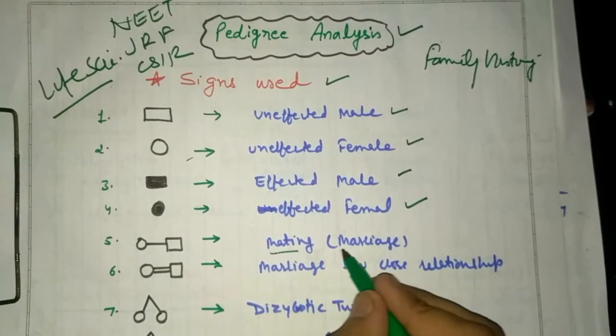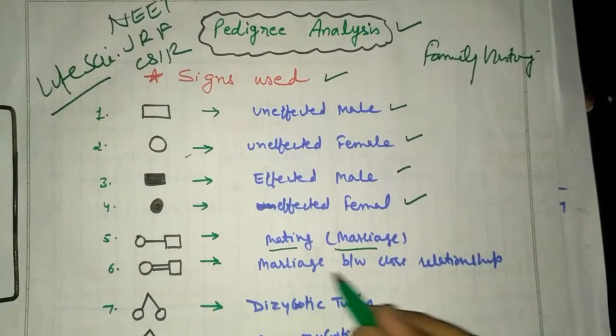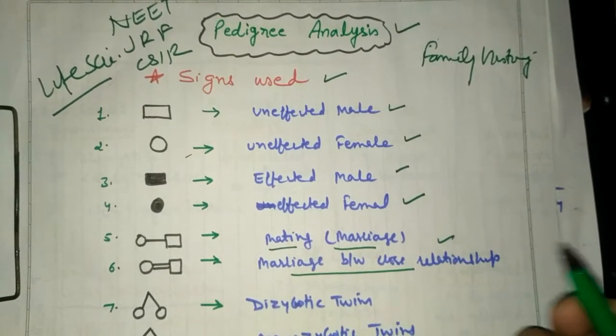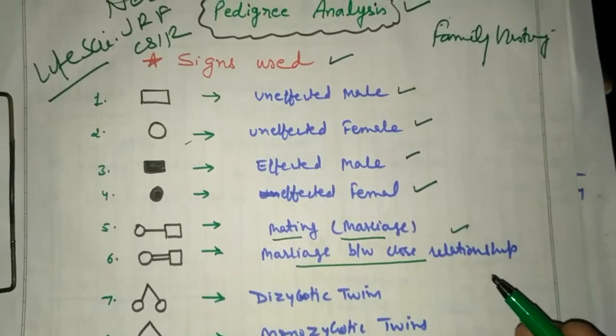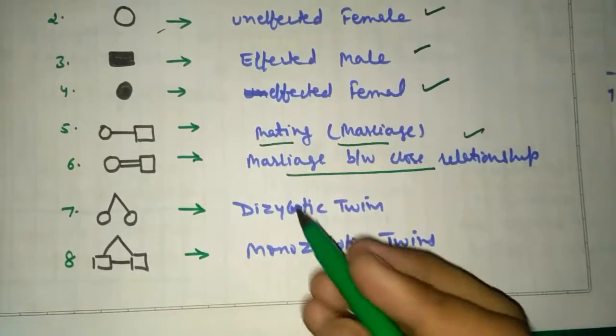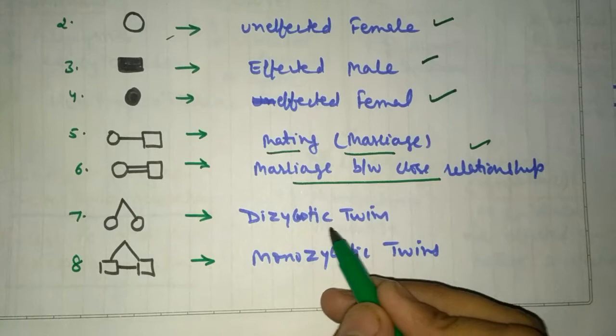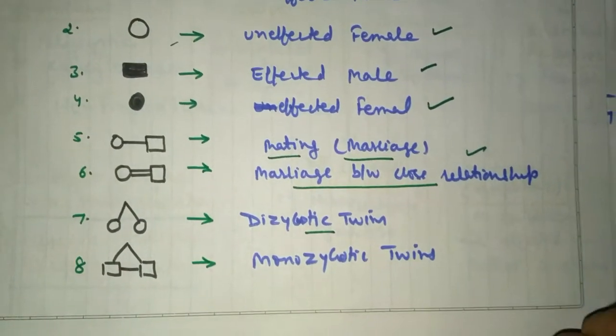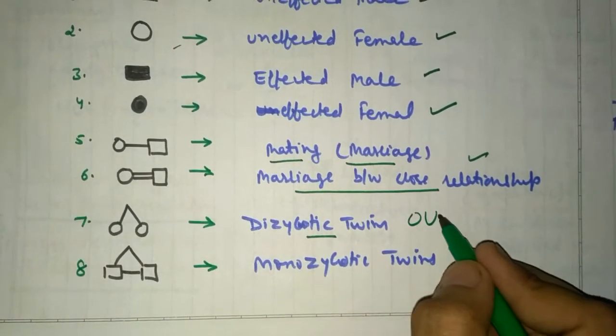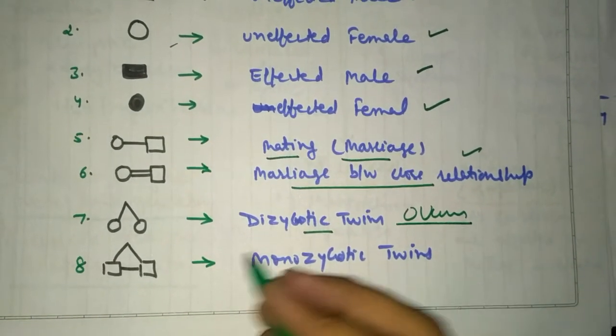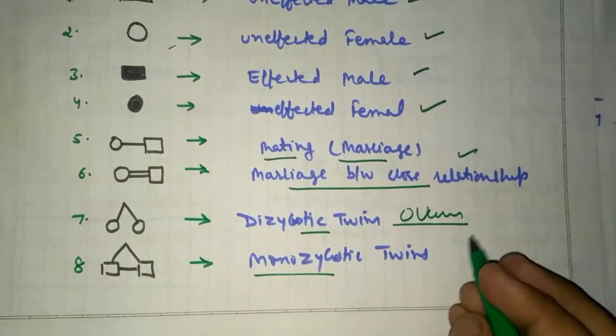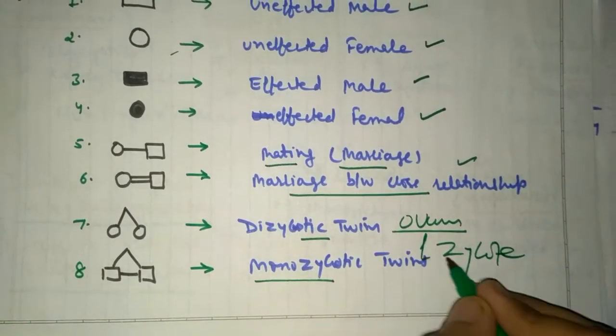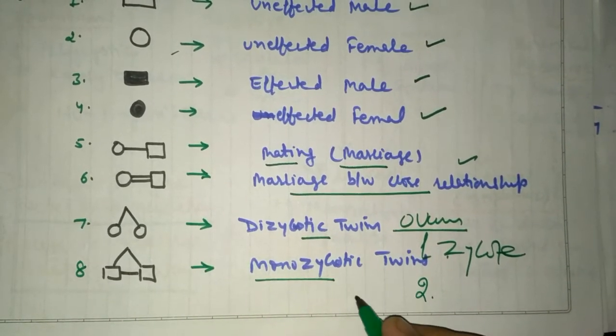This sign of circle and box with the line joining them is called mating or marriage. If there are two lines, it shows marriage between close relations, between cousins or siblings. Next is dizygotic twins that develop from two different zygotes or two different ova. This shows monozygotic twins. It occurs when one zygote divides into two and implants at two different sites in the uterus, giving rise to two different embryos.